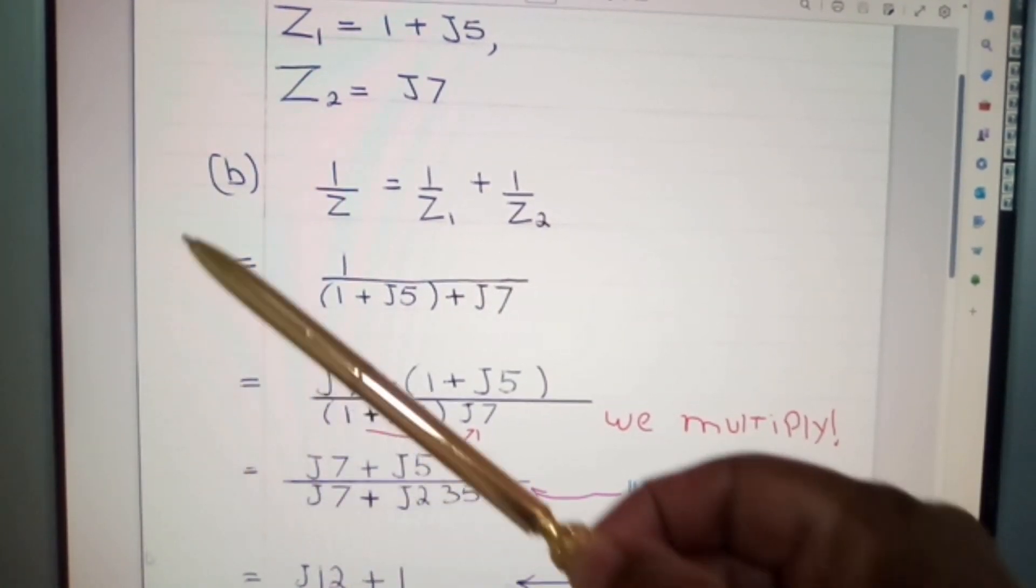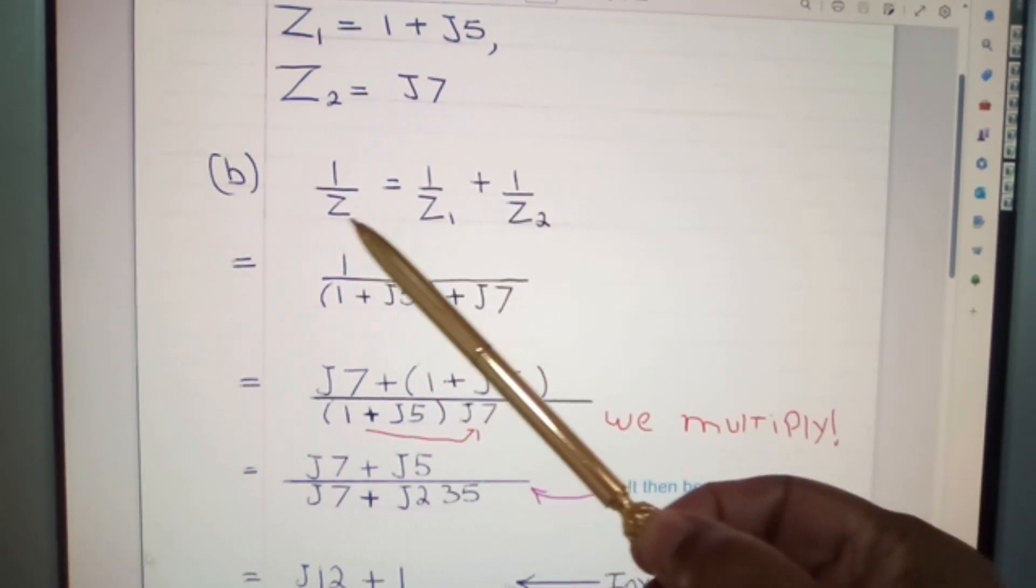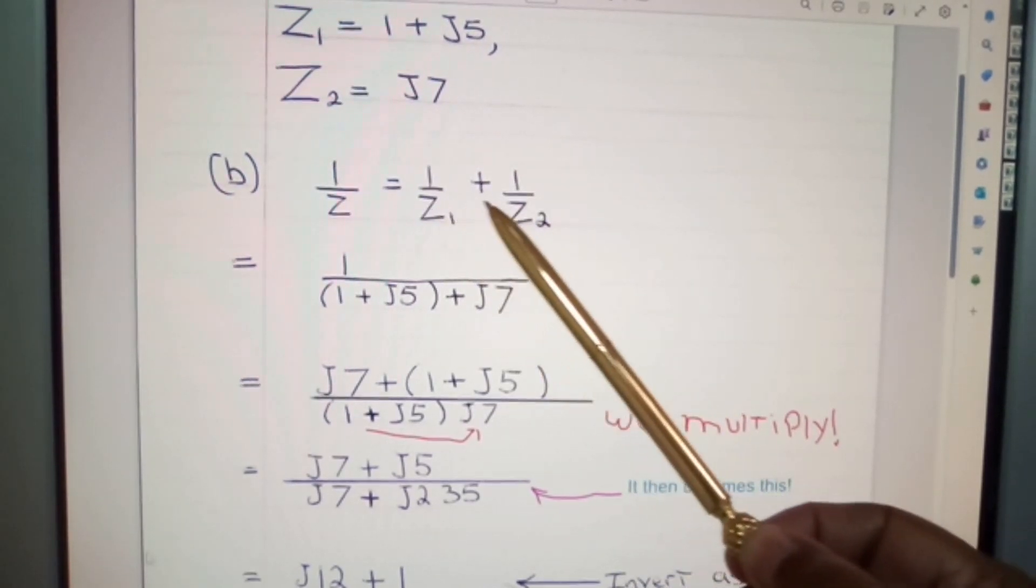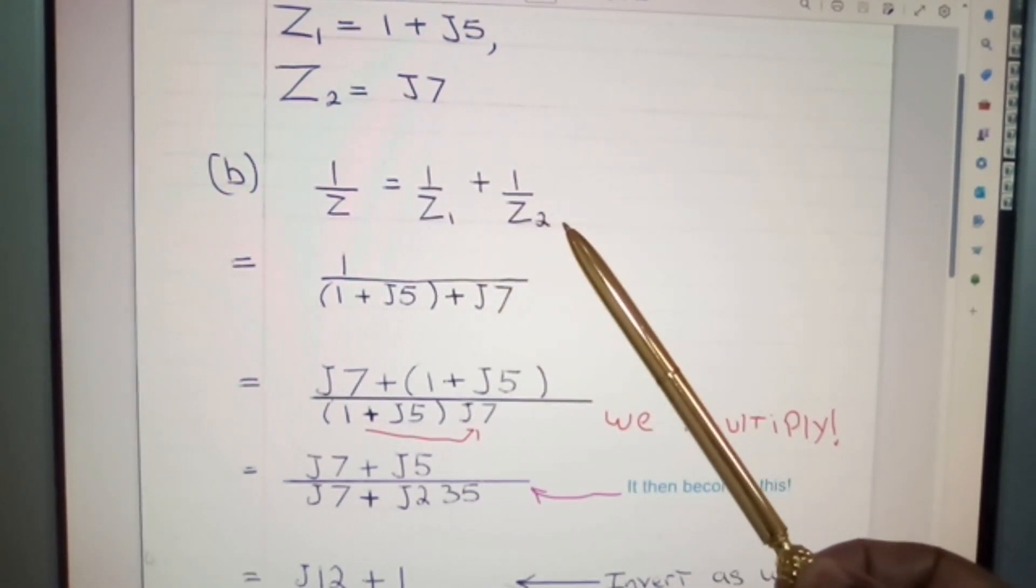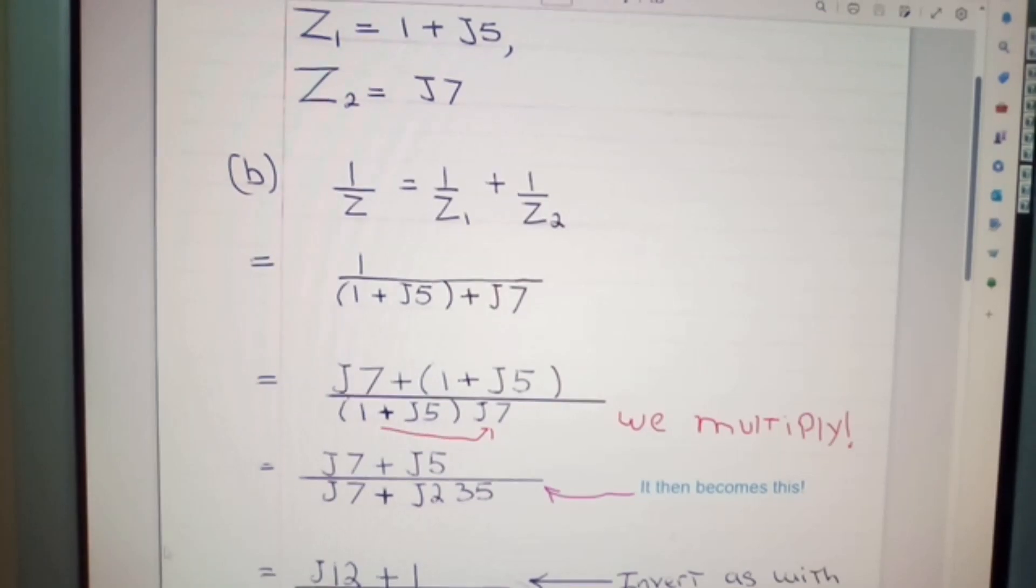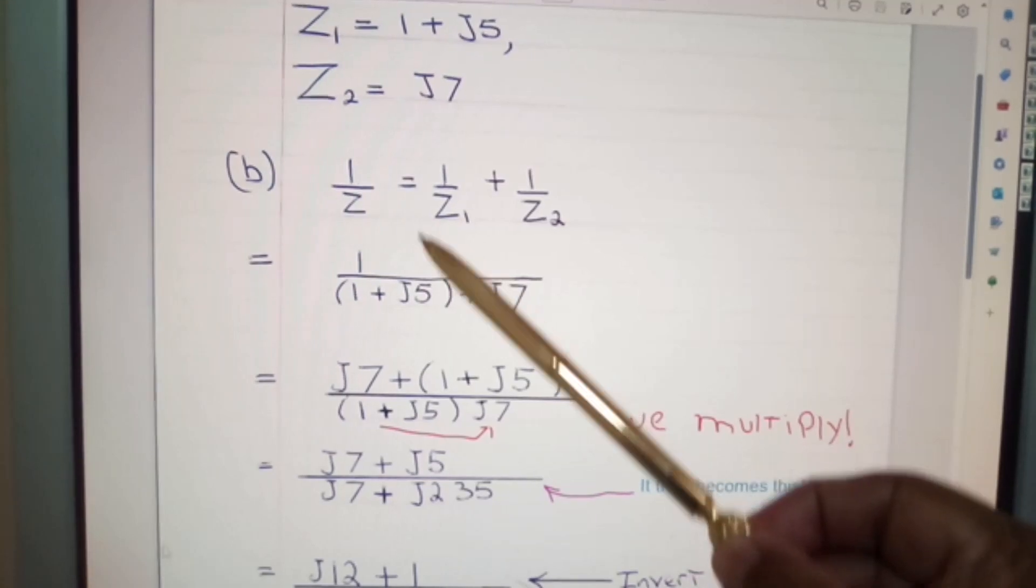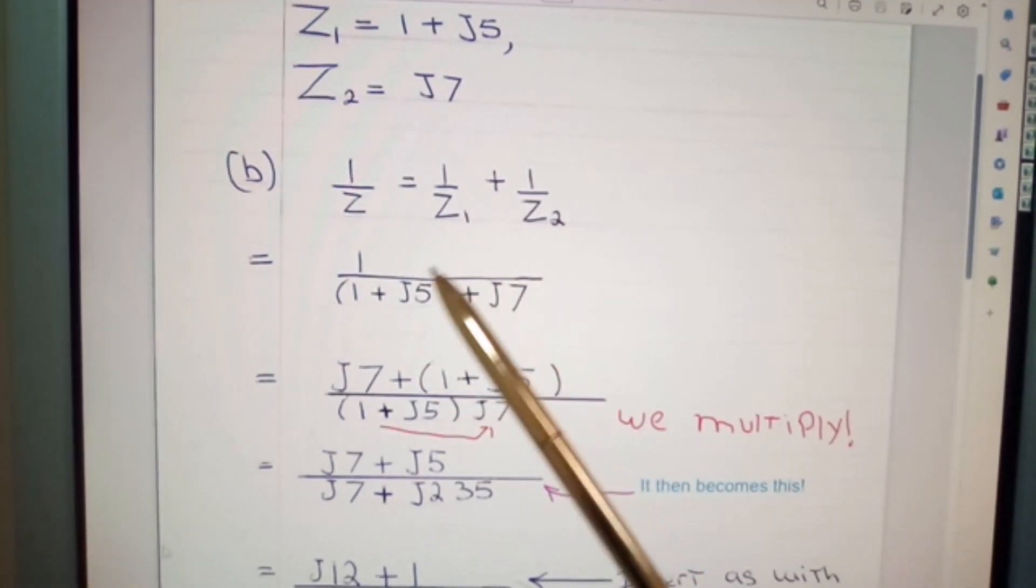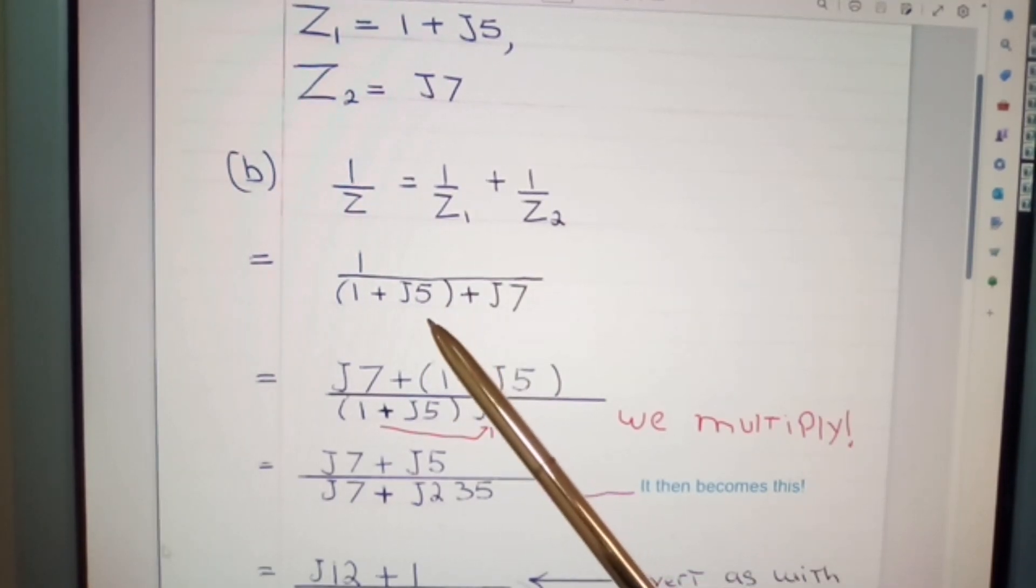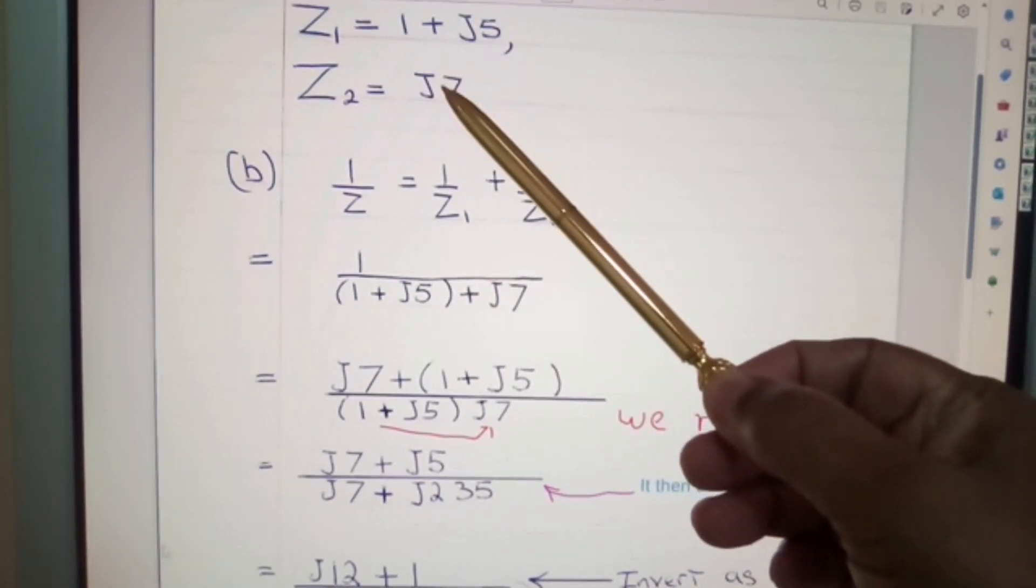And here we have, we'll call it B at this stage. 1 over Z equals 1 over Z1 plus 1 over Z2. Now, remember this is similar to resistors in parallel. And what we've done here, we've taken this as we would for parallel resistors. 1 over 1 plus J5 close bracket, plus J7. And you can see that your values came from here and here.